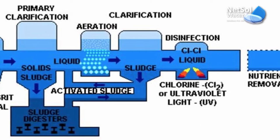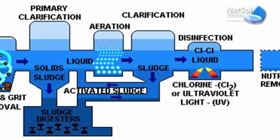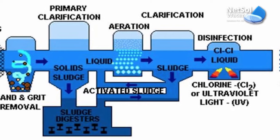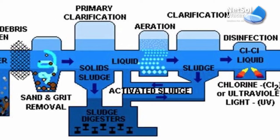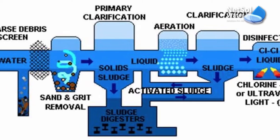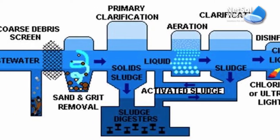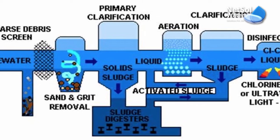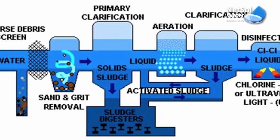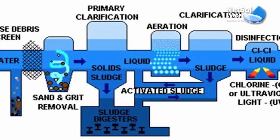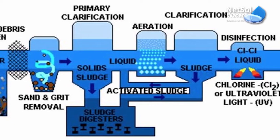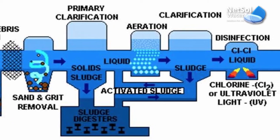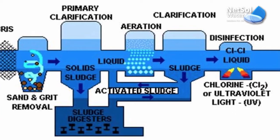In the primary treatment, sewage is stored in a basin where the sludge — that is, solid pollutants — settle to the bottom and the oil and lighter substances rise to the top. After removing these layers, the remaining liquid is sent to the secondary treatment. Sludge digestion is a separate process for treating the sewage sludge after the primary treatment.